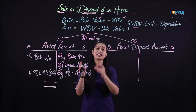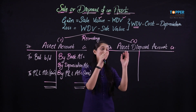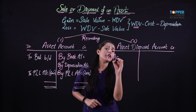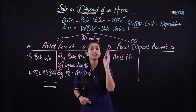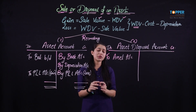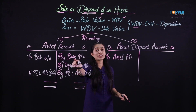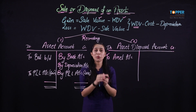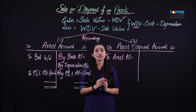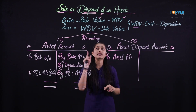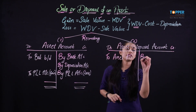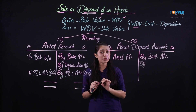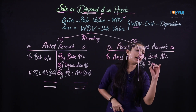Since it is a new account coming into existence, we first transfer the asset to the asset disposal account and then start passing the necessary entries for the sale. Since we are supposed to transfer the asset, we will credit the asset account and debit the asset disposal account. So the very first entry will be: asset disposal account debit to asset account — for the transfer of the asset that has been sold. Once we have the asset, all of the procedure remains the same: firstly record the sale proceeds — by bank — and then record depreciation till the date of sale.